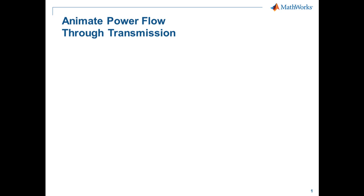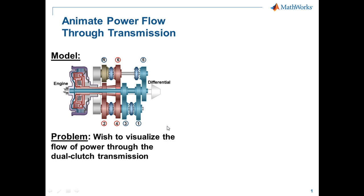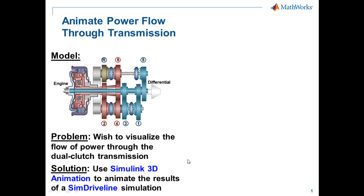In this demonstration we're going to show how you can animate the power flow through a transmission. Our model is of a dual clutch transmission. The flow of power through the transmission is controlled by the states of two input clutches operating in parallel, and dog clutches which pre-select the next gear to which the transmission will shift. We're going to animate the flow of power using Simulink 3D Animation to animate the results of a SimDriveline simulation.